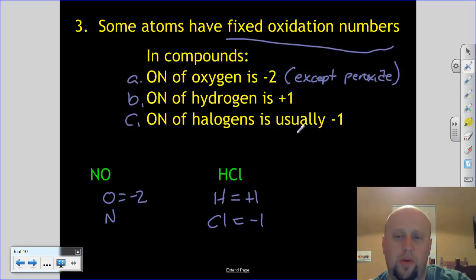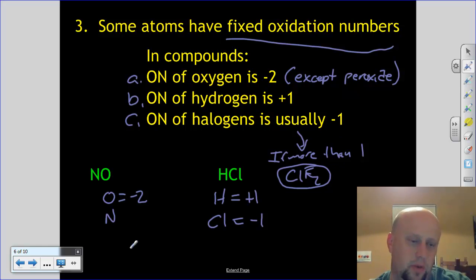So when it says usually, if you have more than one, so if more than one, like if I have, say, let's say ClF2 as a compound, then the fluorine, the more electronegative one, gets the negative one. I'm not going to try to trick you with that, but just sort of a handy rule to keep in your pocket there.